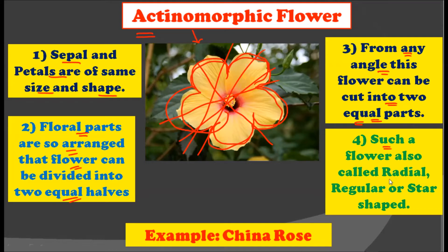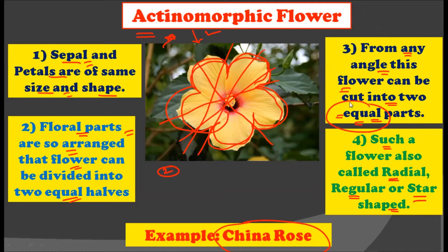Such a flower is also called as the radial flower, regular flower, or a star-shaped flower. The example for the actinomorphic flower is china rose.